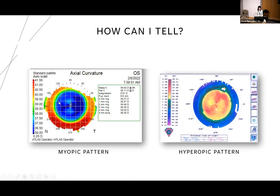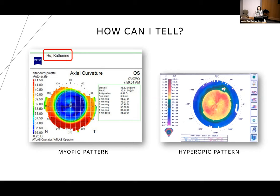On topography, warmer colors are steeper and cooler colors are flatter. A myopic pattern is flatter in the center and steeper in the periphery. A hyperopic pattern is steeper in the center — shown by warmer colors — and flatter in the periphery. Other challenges include abnormal scarring, decentration of ablation, and irregular astigmatism, so findings aren't always clear-cut. This beautifully centered ablation is actually my eye after PRK with Dr. Mifflin.